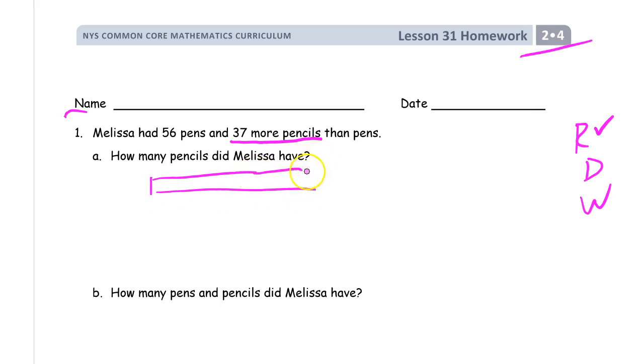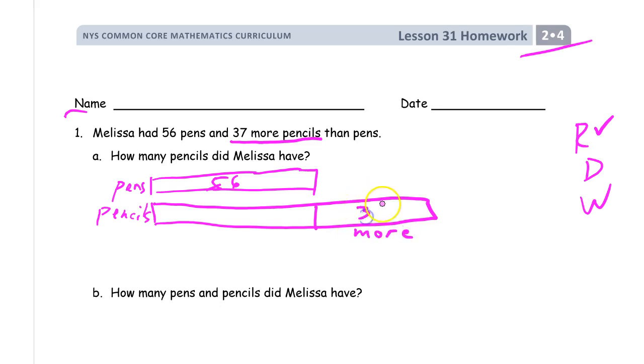Notice it's 37 more pencils, not 37 pencils. I'm going to draw it. Drawing it helps us make sure that we read it correctly. So she has 56. These are pens, right? And she has 56 of those. Then we go to draw the pencils. She has more pencils than pens, so it should be a bigger piece of tape. And you know that the more is 37. This is the more. And she has 37 more.